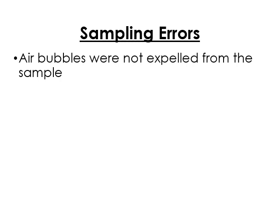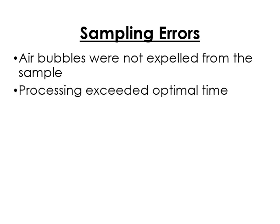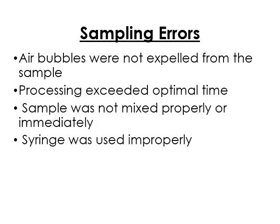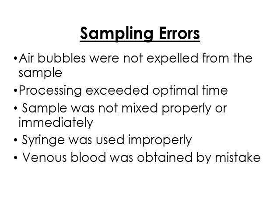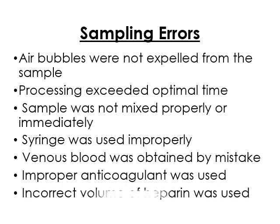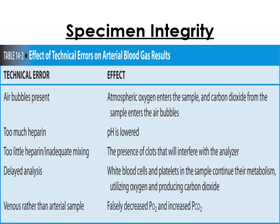Sampling errors include: presence of air bubbles, exceeded optimal time, sample not mixed properly, syringe used improperly, venous blood collected instead of arterial blood, wrong anticoagulant used instead of heparin, and incorrect volume of heparin.